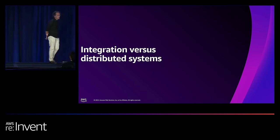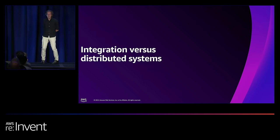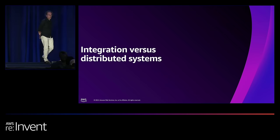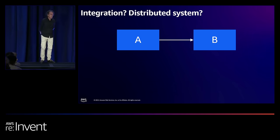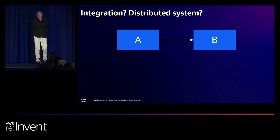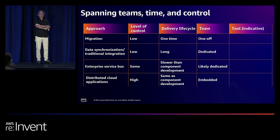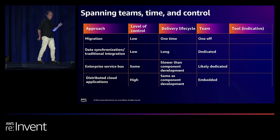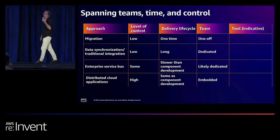What is actually the difference between integrating something and building a distributed system? Both look like two blue boxes with a line — multiple components connected. The difference isn't so much on the technical side. It's about when you do this, how often, and how much control you have over the items you deal with. That's where we notice the difference between data migration, integration, and building a distributed system.